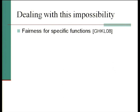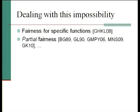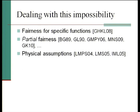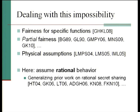There are a variety of ways to deal with this. One option is to look at fairness for specific functions — there are some functions where you can do it. You can also achieve partial fairness, which is a relaxation of the fairness definition. You can also do it with physical assumptions: if you have envelopes, ballot boxes, et cetera that are secure, then you can do this.